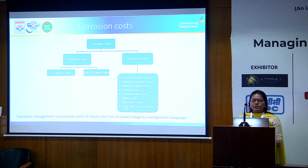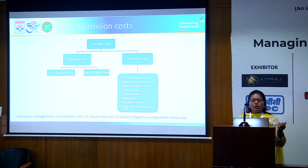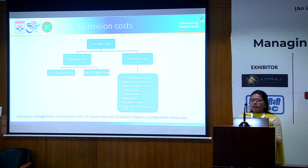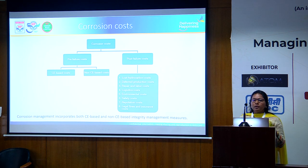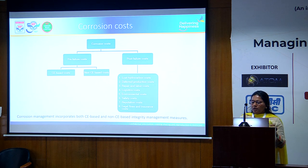Preemption has two components: corrosion engineering-based cost and non-corrosion engineering cost. This all encompasses corrosion management. When corrosion management is in place in an operational plant, it becomes very easy — more facilitating — to have corrosion failure preemptions.